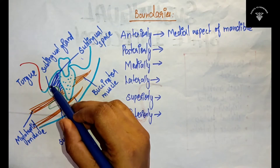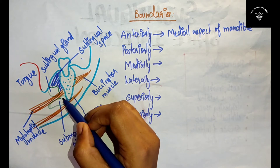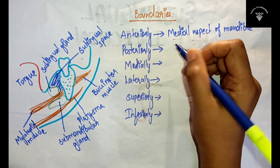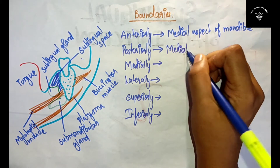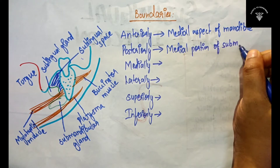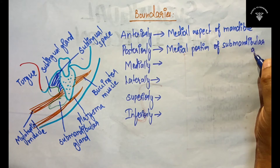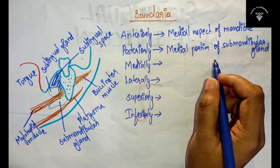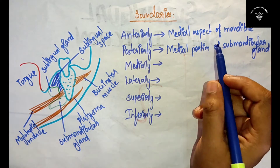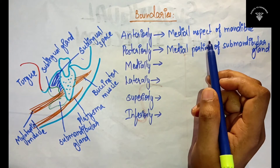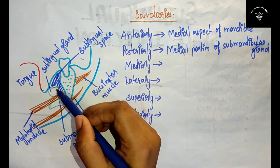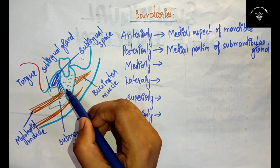Now posteriorly, posteriorly you will be having your submandibular gland — specifically the medial portion of the submandibular gland, as well as the superior and posterior portion of the submandibular gland. So anteriorly you will have the medial aspect of mandible, and posteriorly the medial, superior, and posterior portion of the submandibular gland.